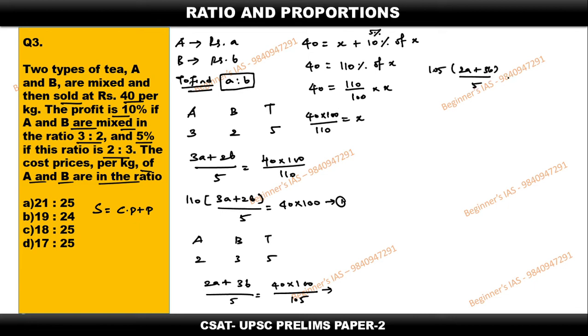Now just take this as equation number two. From equation number one and two you could see that RHS are same. If RHS are same, just equate the LHS. Therefore 110 into 3a plus 2b by 5 which is equal to 105 into 2a plus 3b by 5.